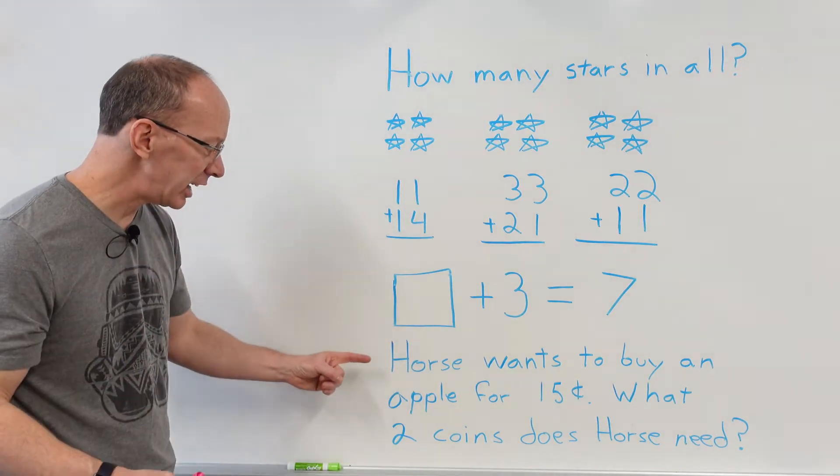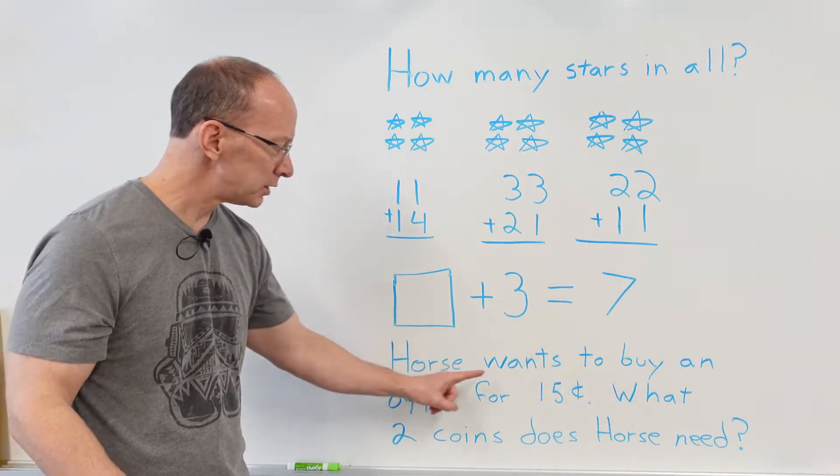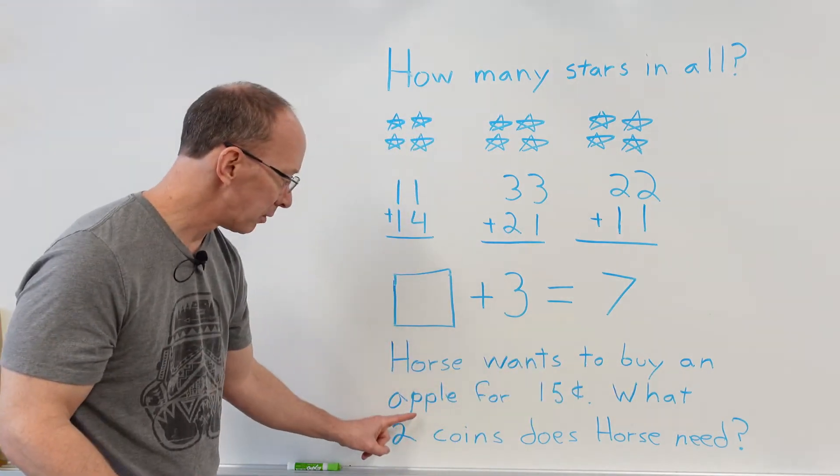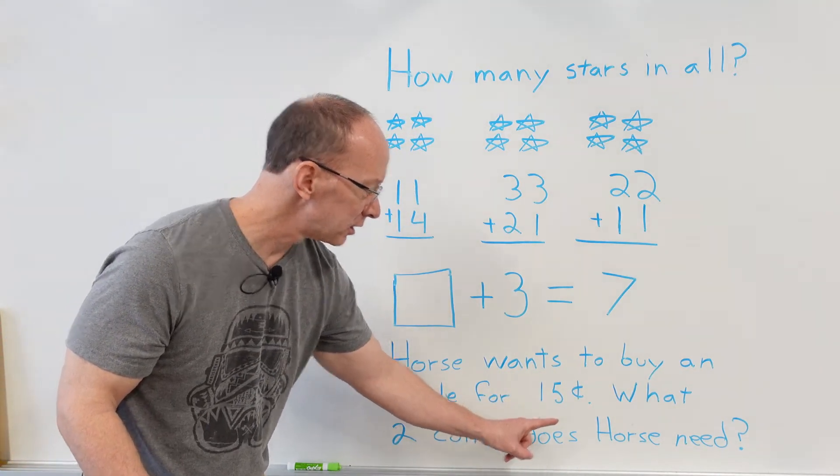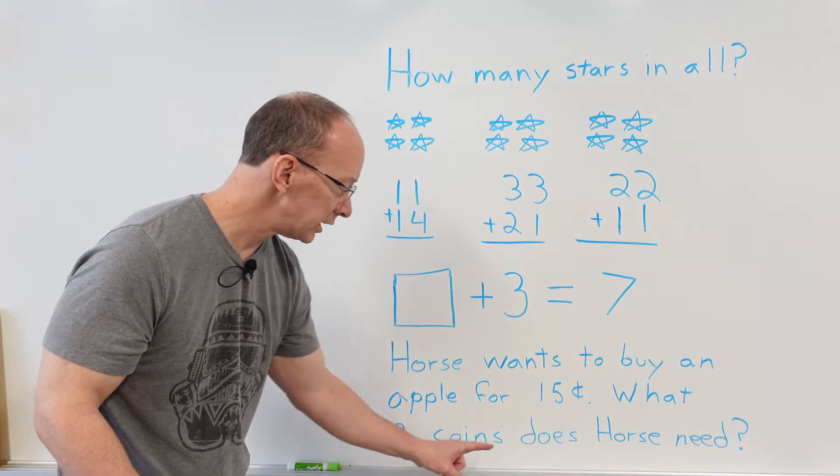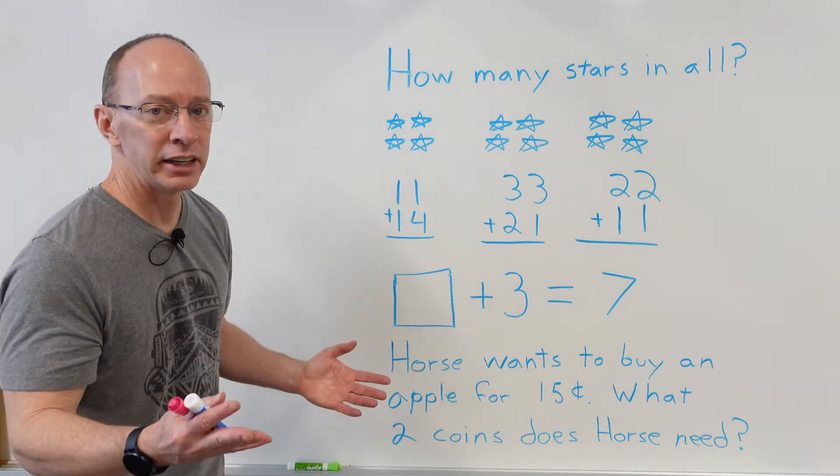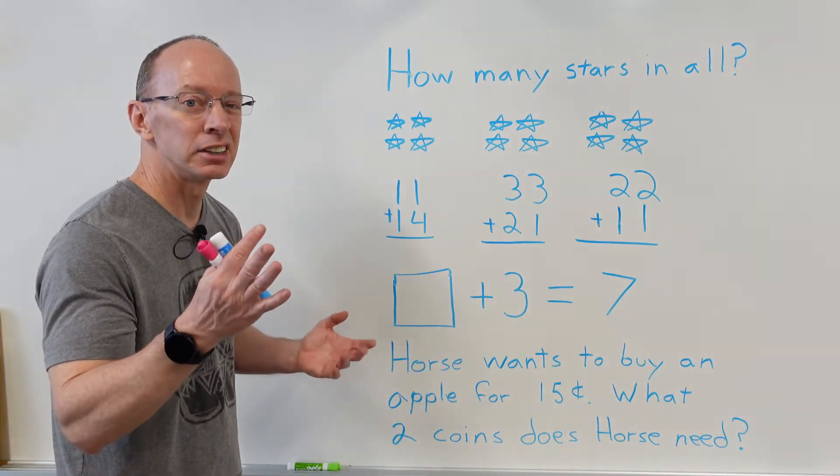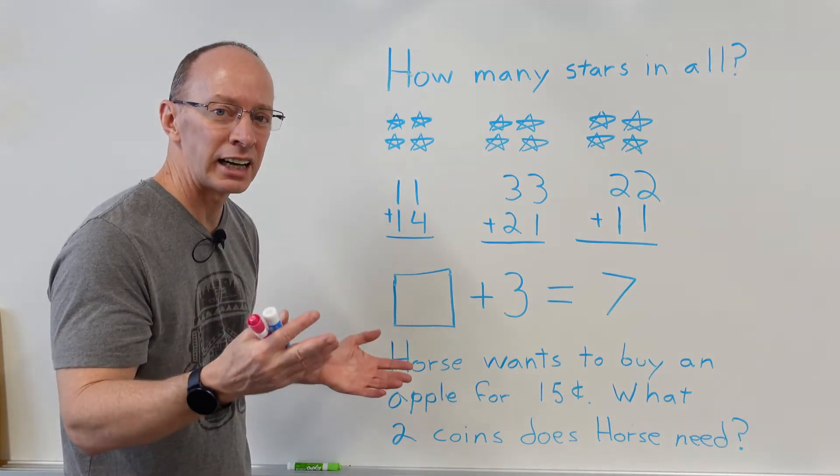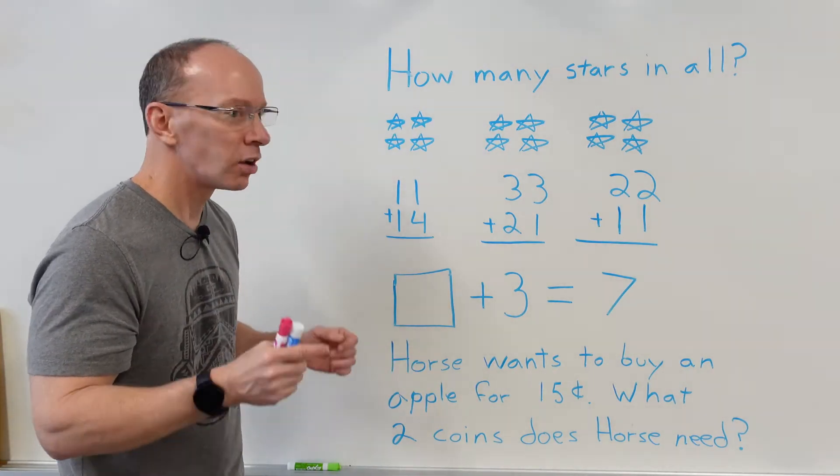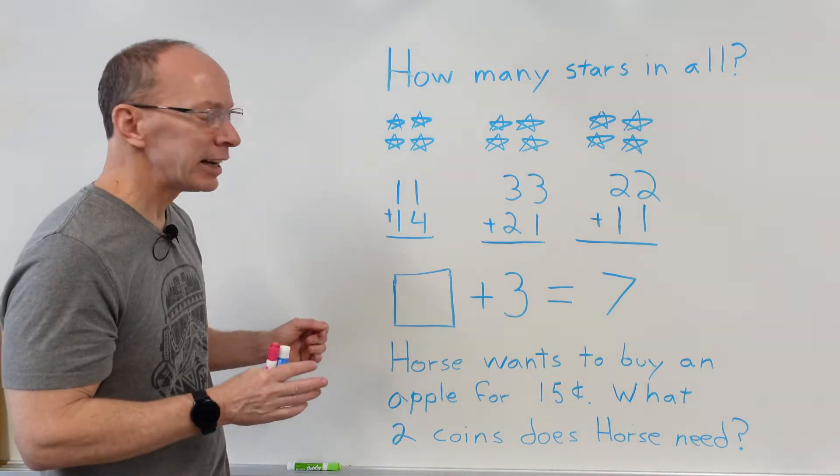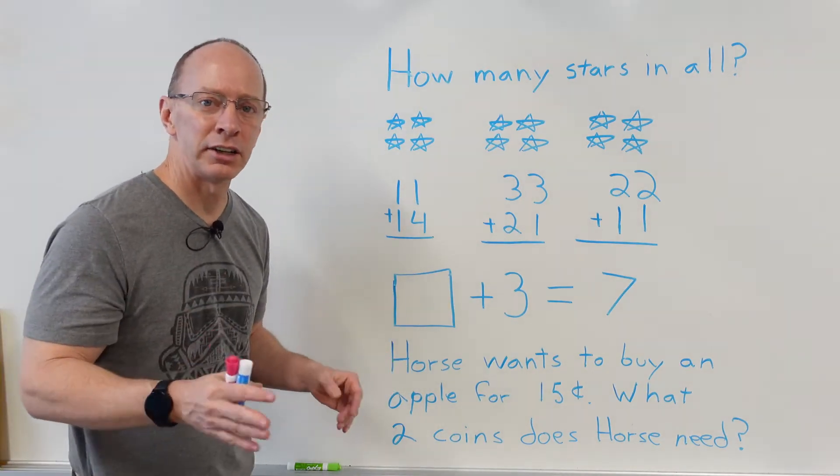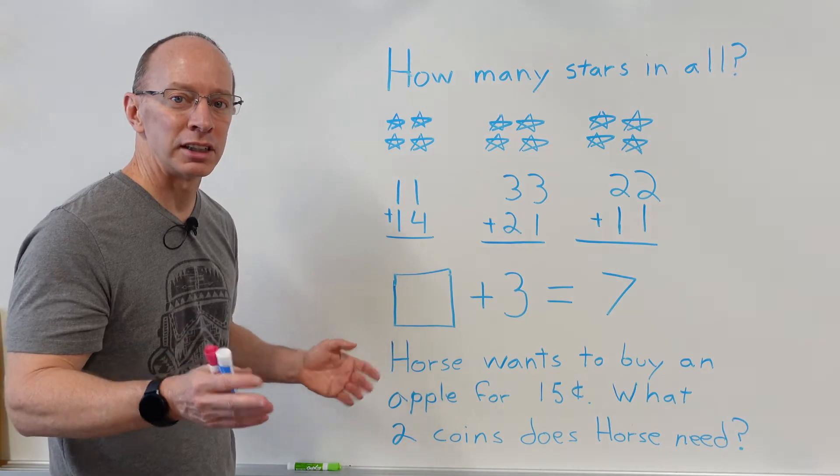And then our story problem of the day is: Horse wants to buy an apple for 15 cents. What two coins does Horse need? And I'll give you a hint—it's going to be either some nickels, dimes, or pennies. So I'll let you choose that. And right now go ahead and pause the video, and when you're ready to go over the answers, unpause it.